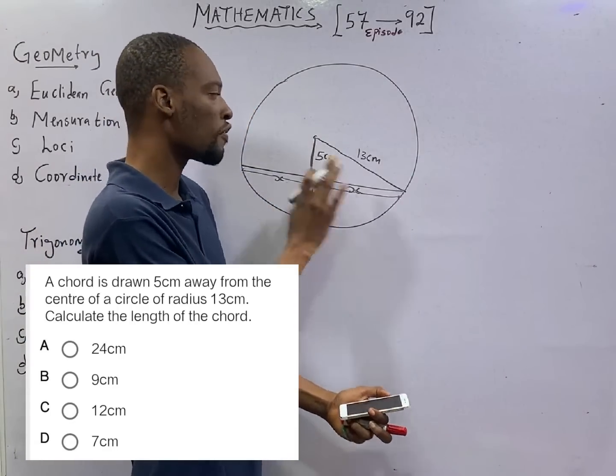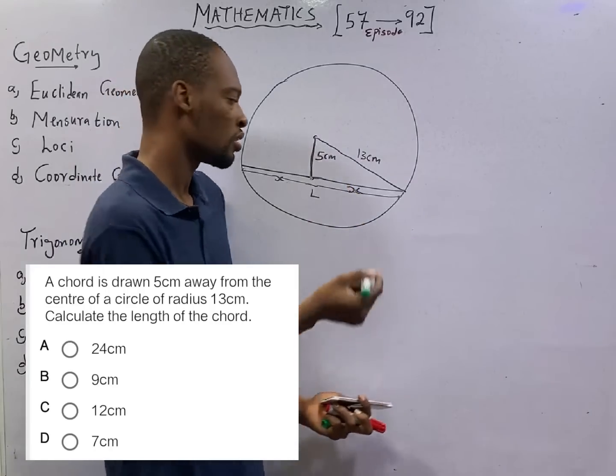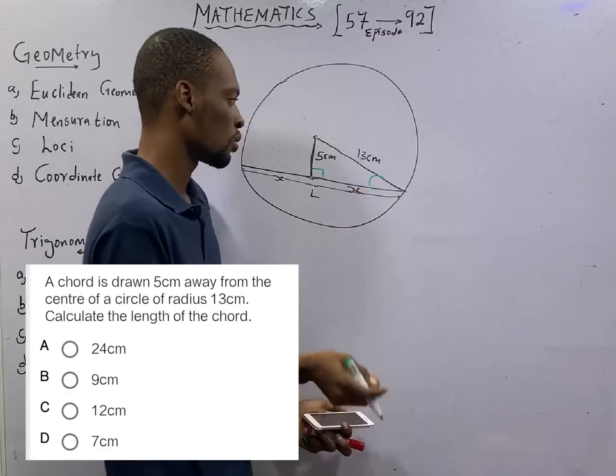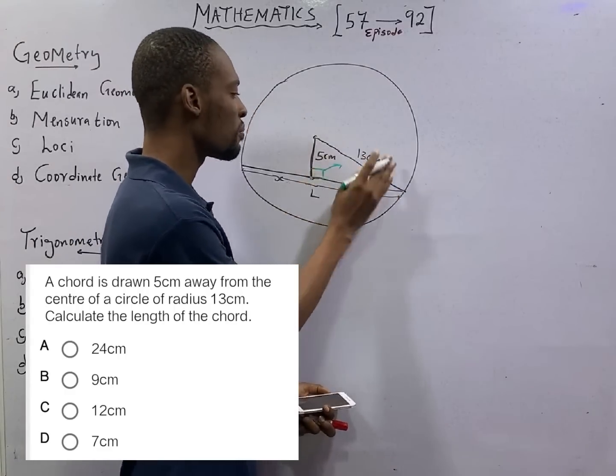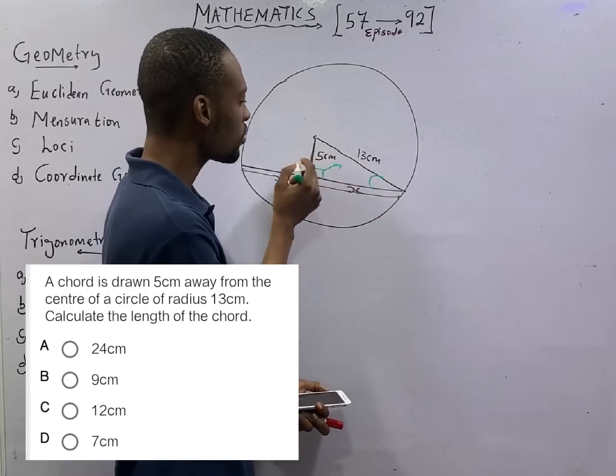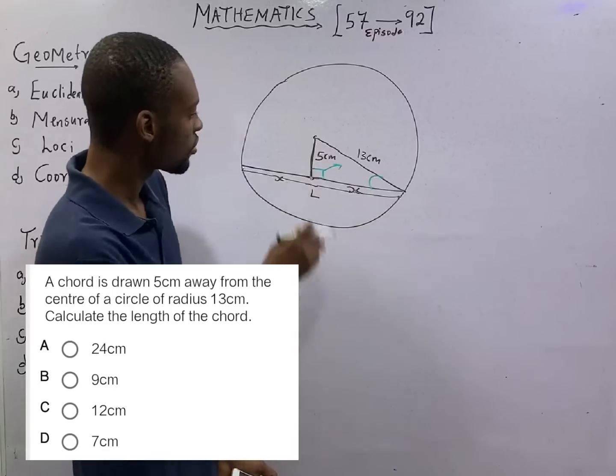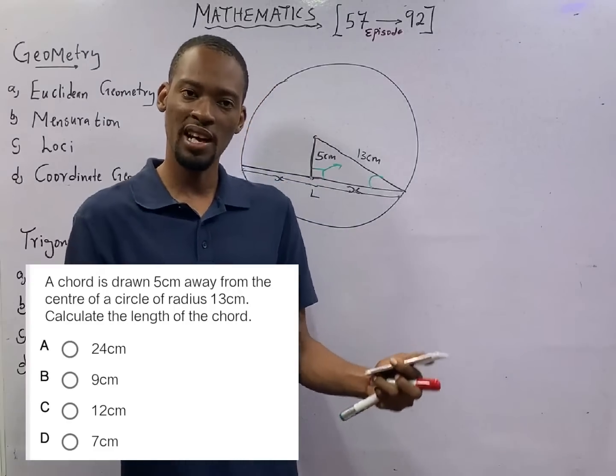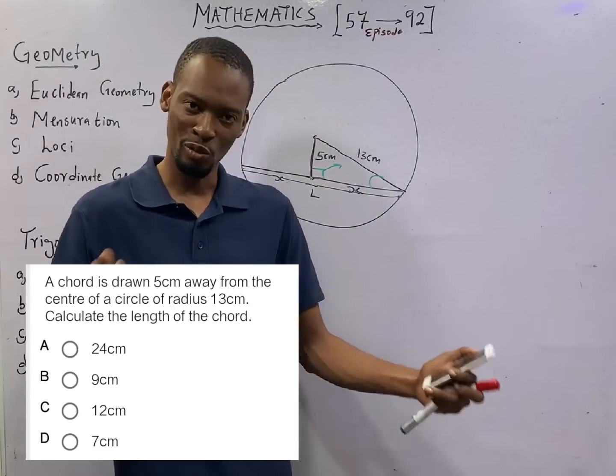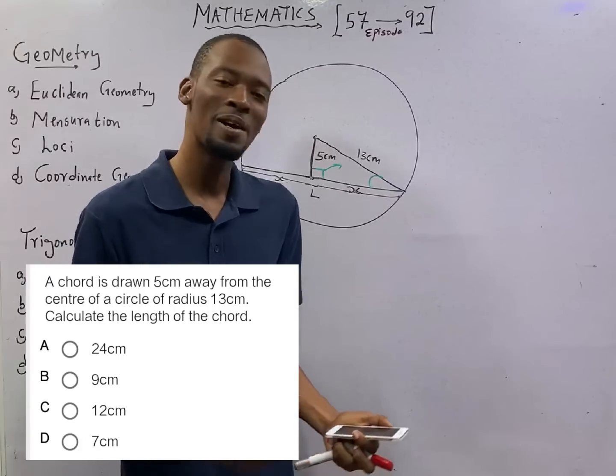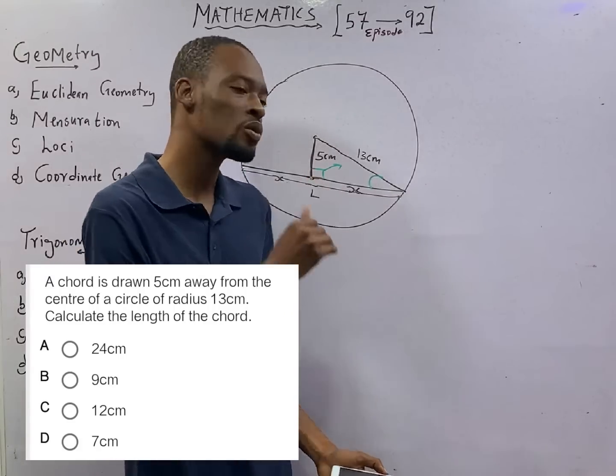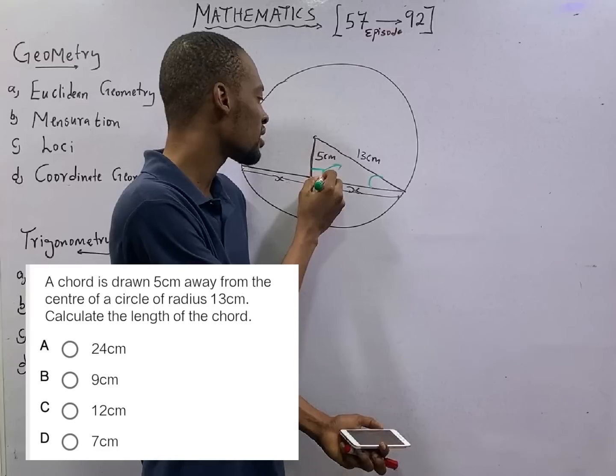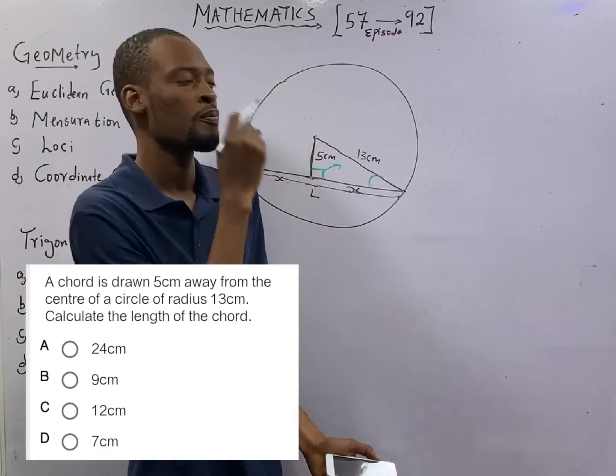To do that, this is easy for us. This is an adjacent side of a right-angled triangle, because this is a right angle at 90 degrees. The side facing the 90 degrees is the hypotenuse. So here is 5 cm, here is 13 cm. When you are dealing with a right-angled triangle, Pythagoras theorem comes in. From Pythagoras theorem,